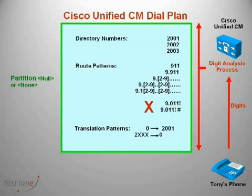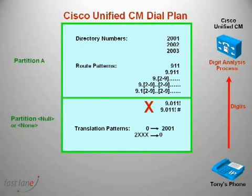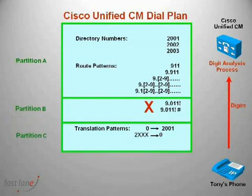Numbers in the null or none partition are reachable by all devices. Firstly, I will create partition A and assign that to the directory numbers and the route patterns that do not include international access. Next, I will create partition B and assign that to the international route patterns. And lastly, partition C and assign that to the translation patterns.